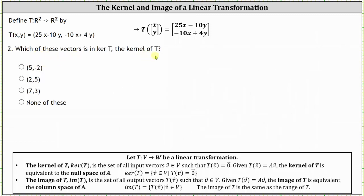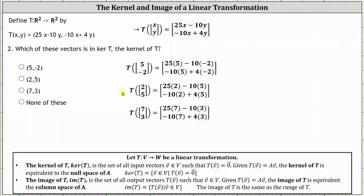Now to determine which of these vectors is in the kernel of T. The kernel of T is the set of all input vectors such that T of the input vector equals the zero vector. We find T of (5, -2), T of (2, 5), and T of (7, 3) by substituting x and y into the formulas for the x and y components of the output vectors, looking to see if any result in the zero vector. Performing the calculations, only T of the vector (2, 5) is equal to the zero vector, and therefore the only vector in the kernel of T is the vector (2, 5).